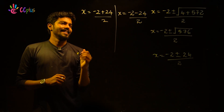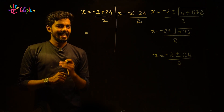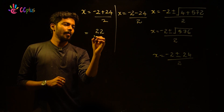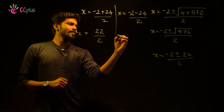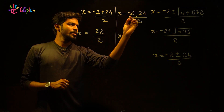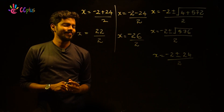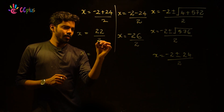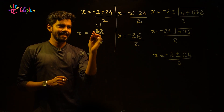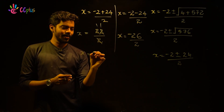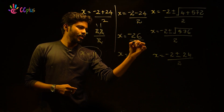Clear. For the first case: minus 2 plus 24 equals 22, divided by 2, so x equals 11. For the second case: minus 2 minus 24 equals minus 26, divided by 2, so x equals minus 13.